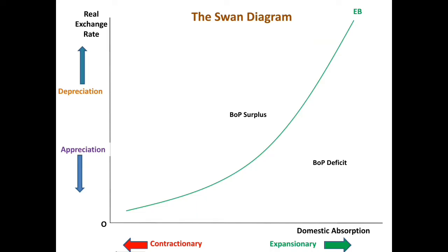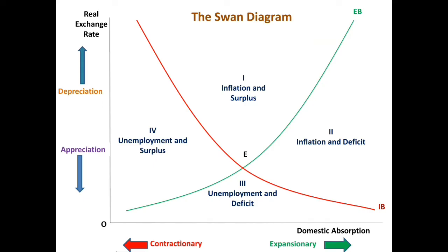Now we superimpose these two curves to draw the SWAN diagram. There is an intersection of the internal balance and external balance curves at point E, where there is simultaneous attainment of internal and external balance. The SWAN diagram divides the entire economy into four zones: Zone 1 — external surplus with internal inflation; Zone 2 — external deficit with internal inflation; Zone 3 — external deficit with internal unemployment; Zone 4 — external surplus with internal unemployment. Only at point E, where IB and EB curves intersect, does the economy find itself in both internal and external equilibrium.